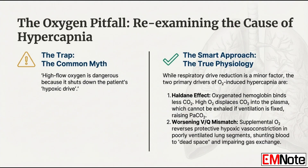The major problems are purely physiological — two big mechanisms happening at the level of the red blood cell and the alveoli. The first is the Haldane effect. Think of hemoglobin as a highly competitive shuttle system for gases. Normally, deoxygenated hemoglobin gets back to the lungs and grabs oxygen. But when hemoglobin binds a huge load of oxygen — as with high-flow O2 — it changes its structure, forcing it to dump its other cargo, carbon dioxide, straight into the plasma. The patient's system is already struggling to breathe off CO2, and you've just unloaded a massive extra amount into their bloodstream that their failing lungs cannot clear. That's what rapidly drives up the PaCO2.